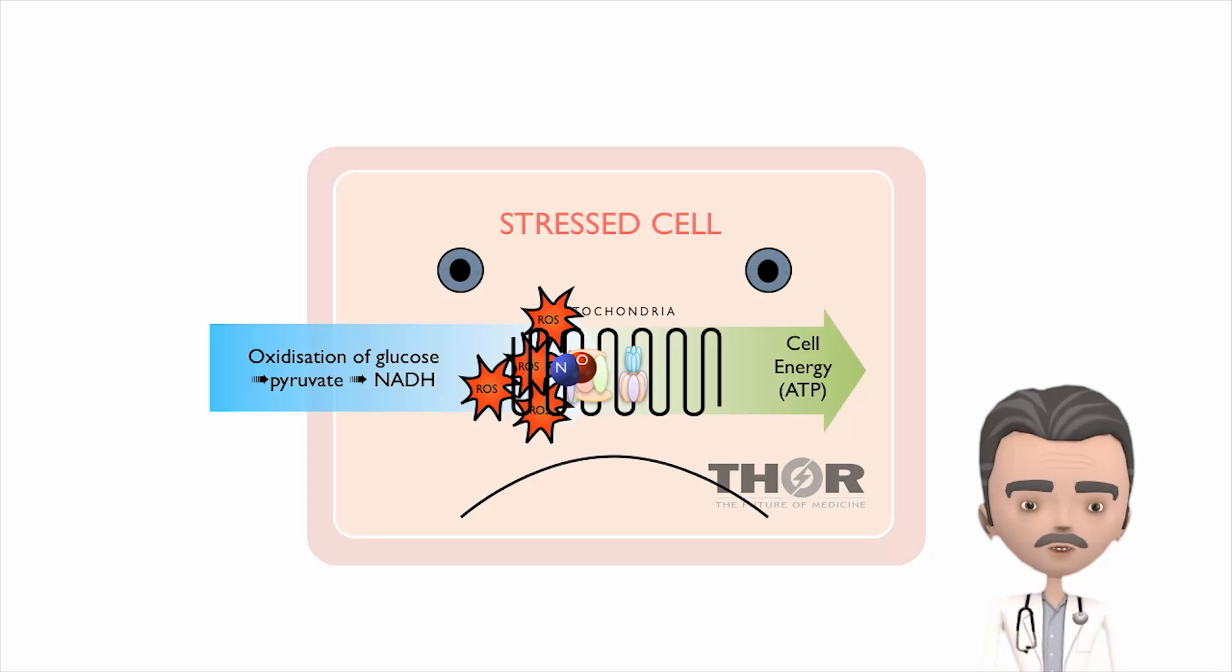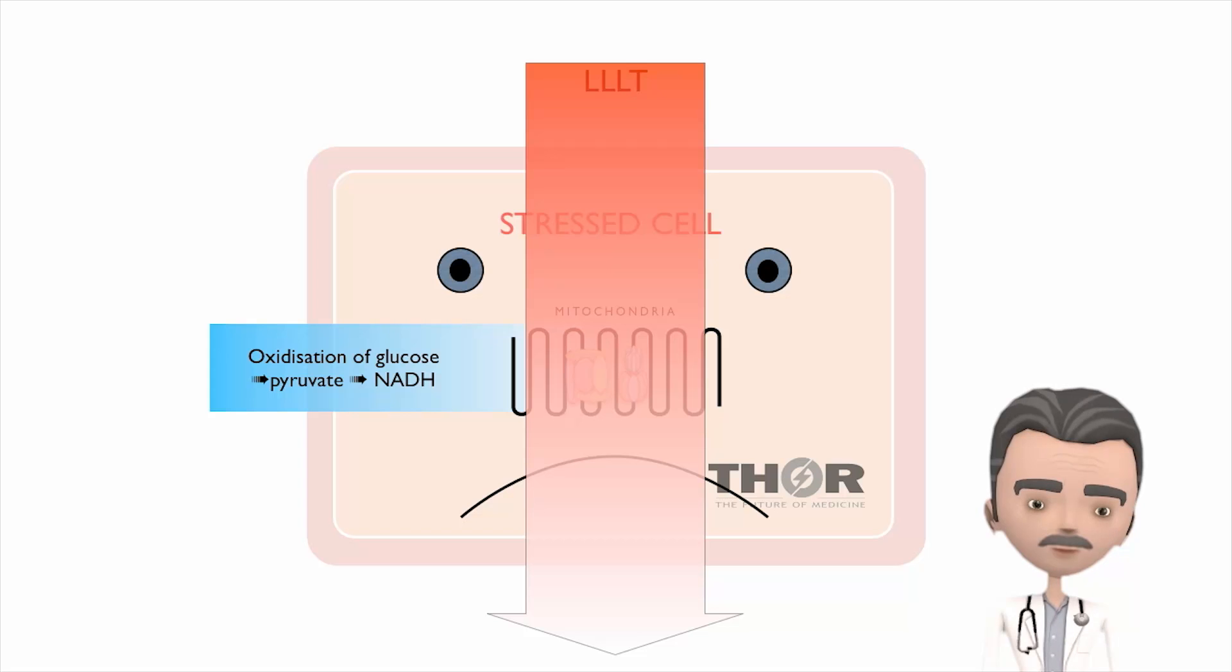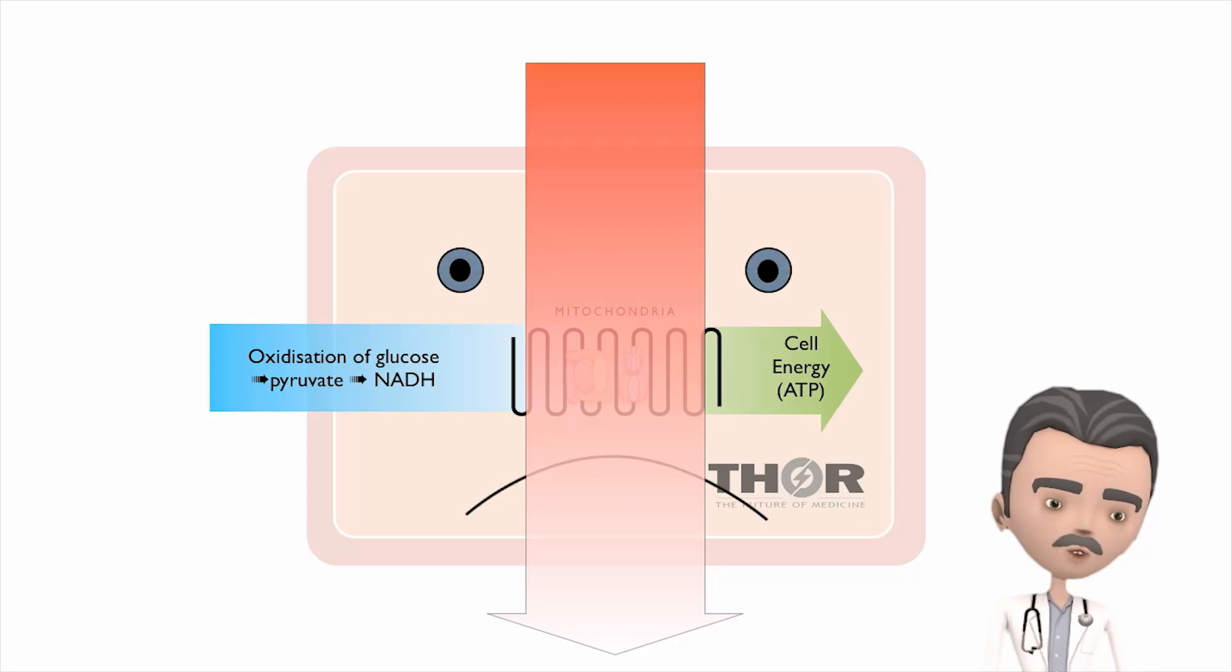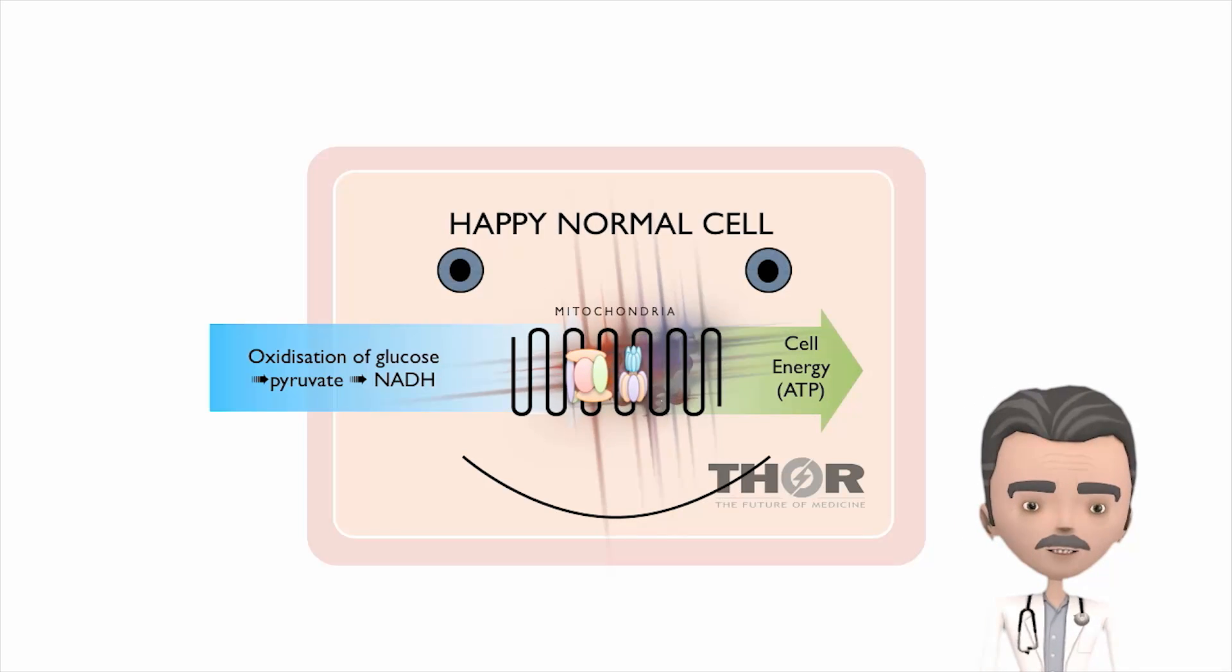Low level laser and LED therapy breaks the bond between nitric oxide and cytochrome C oxidase, allowing oxygen to combine with NADH so that ATP can be produced and the oxidative stress to be abolished.